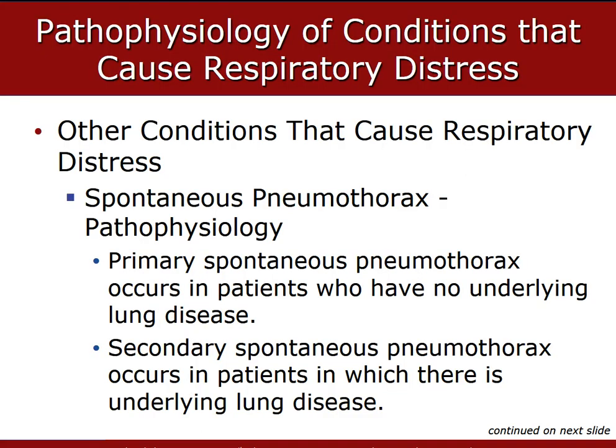Primary spontaneous pneumothorax occurs in patients in their teenage years to early 20s who are tall and thin — the visceral pleura is stretched within the chest cavity beyond its normal limit. Many patients with secondary pneumothorax have a history of cigarette smoking or a connective tissue disorder such as Marfan syndrome or Ehlers-Danlos syndrome. It also occurs in patients with a history of lung disease or COPD who are more prone to spontaneous pneumothorax from areas of weakened lung tissue called blebs or bullae.